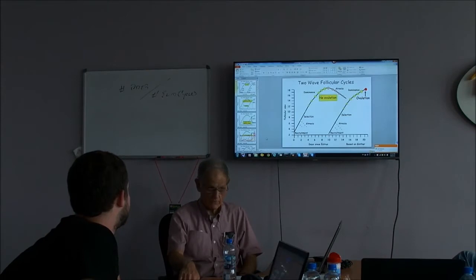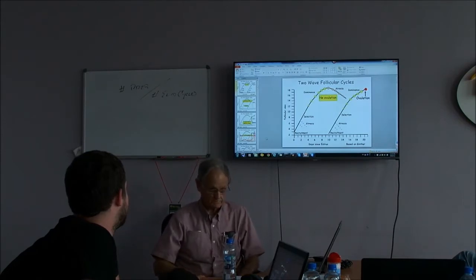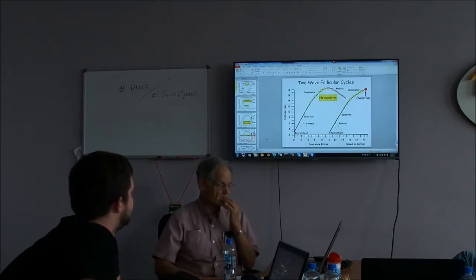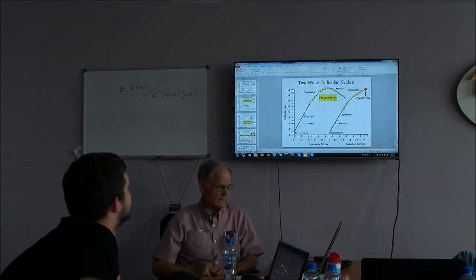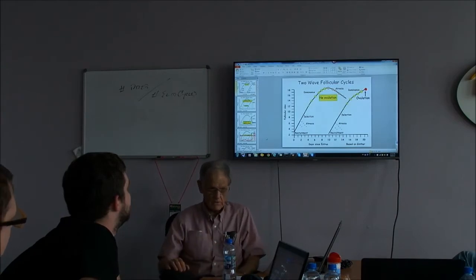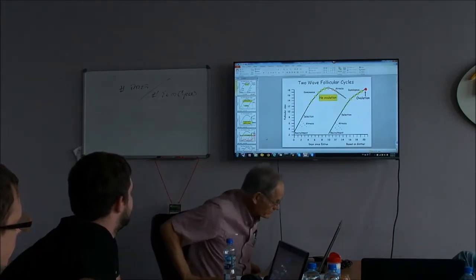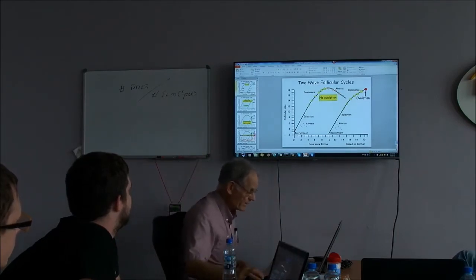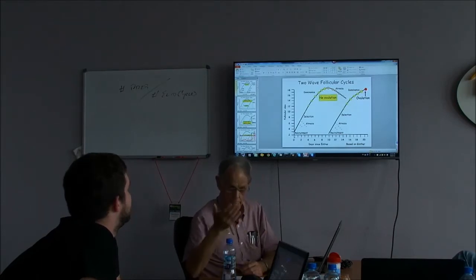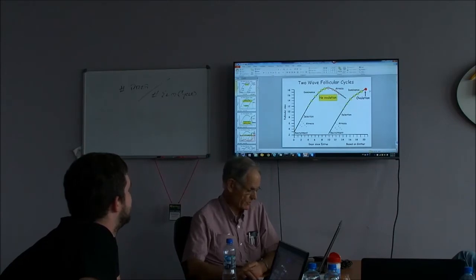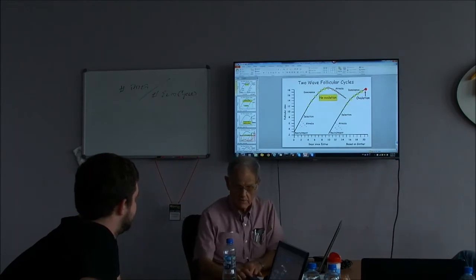This mostly has to do with the use of ultrasound and some other advanced techniques that have allowed researchers to study reproduction. The slide that's up here now is actually a representation of what is going on in a 21-day cycle. So at day zero, we are just at ovulation, which is also where we are at 21 days. What we are looking at is the activity on the ovaries.